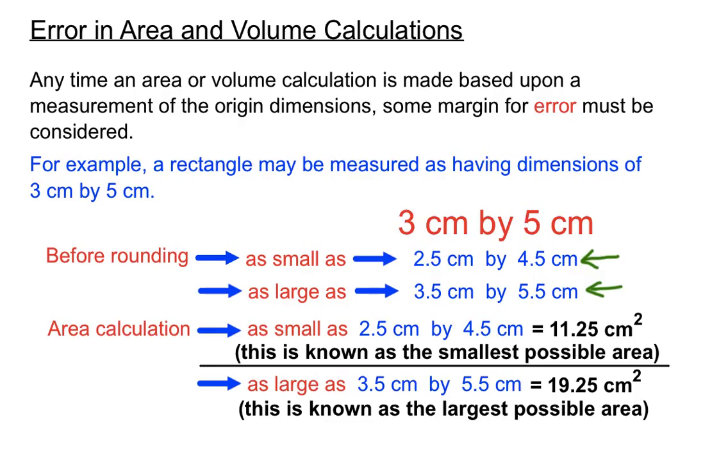We think about what the numbers could have been — both large and small — before they became rounded to 3 and 5 centimeters.